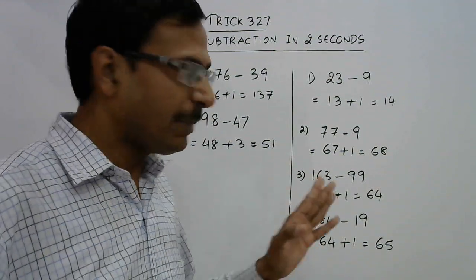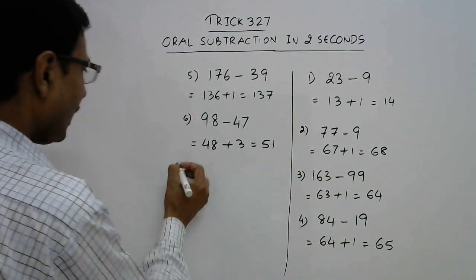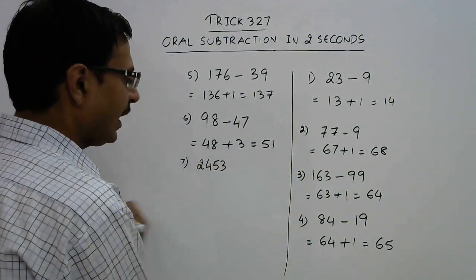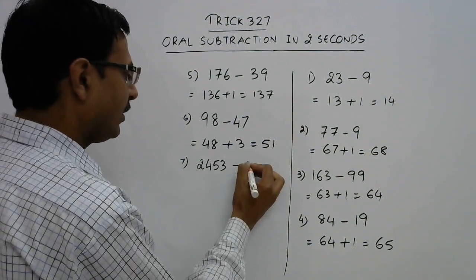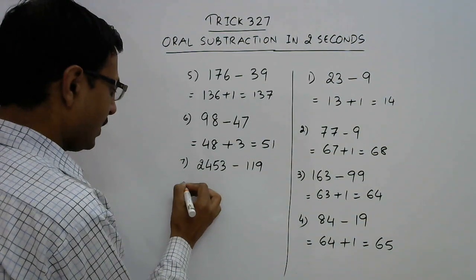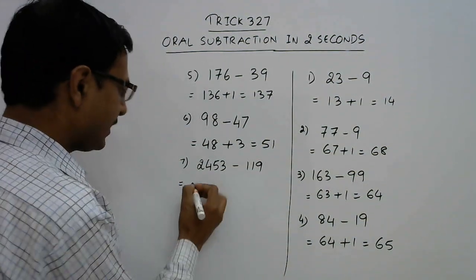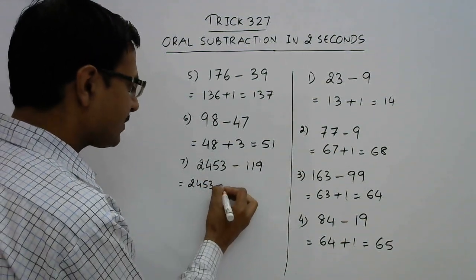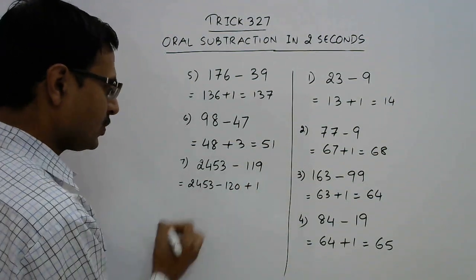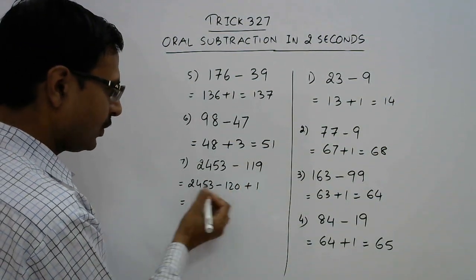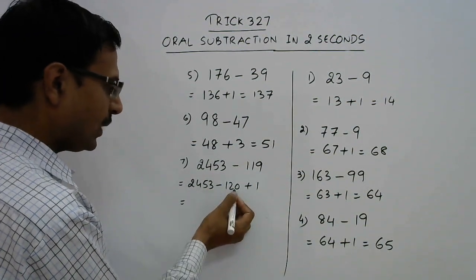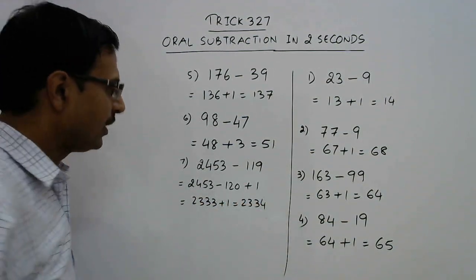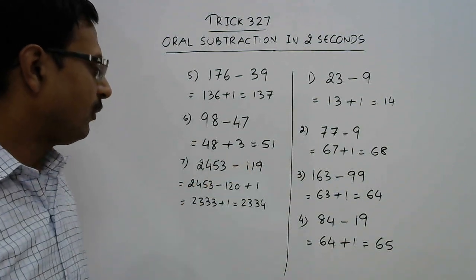Let us take more examples. Suppose we have 2453 and we need to subtract 119. I will write one more step here to explain: subtracting 119 is actually subtracting 120 and adding 1. So reduce 2453 by 100 to get 2353, then by 20 to get 2333, and add 1 to get 2334 as the difference of 2453 and 119.